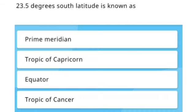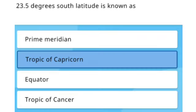The next question: 23.5 degrees south latitude is known as — Option 1: Prime meridian. Option 2: Tropic of Capricorn. Option 3: Equator. Option 4: Tropic of Cancer. The right answer is Option 2 — Tropic of Capricorn.